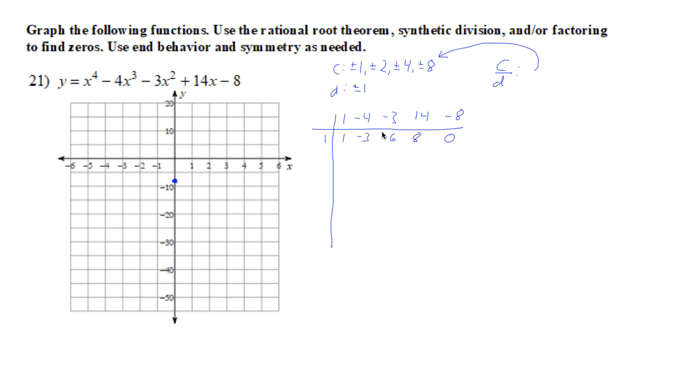And 1 times 8 plus negative 8 is 0. First try, excellent! So we know x minus 1 is a factor, and we have x cubed minus 3x squared minus 6x plus 8.